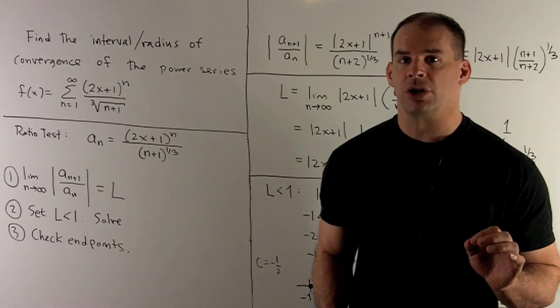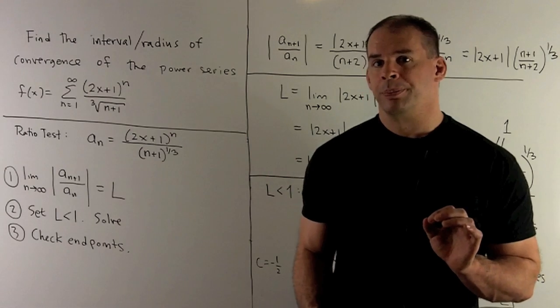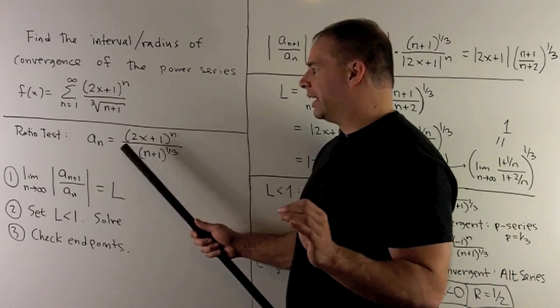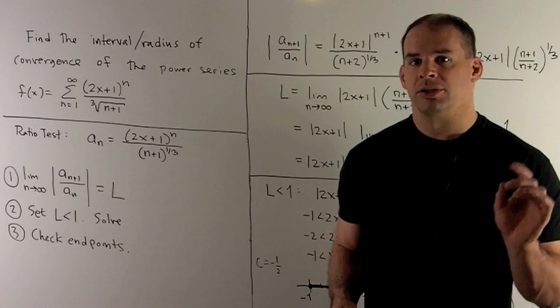To find our interval of convergence, we're going to use the ratio test. How does our procedure work? We're going to call our general term a_n, so that'll be (2x+1)^n over (n+1)^(1/3).